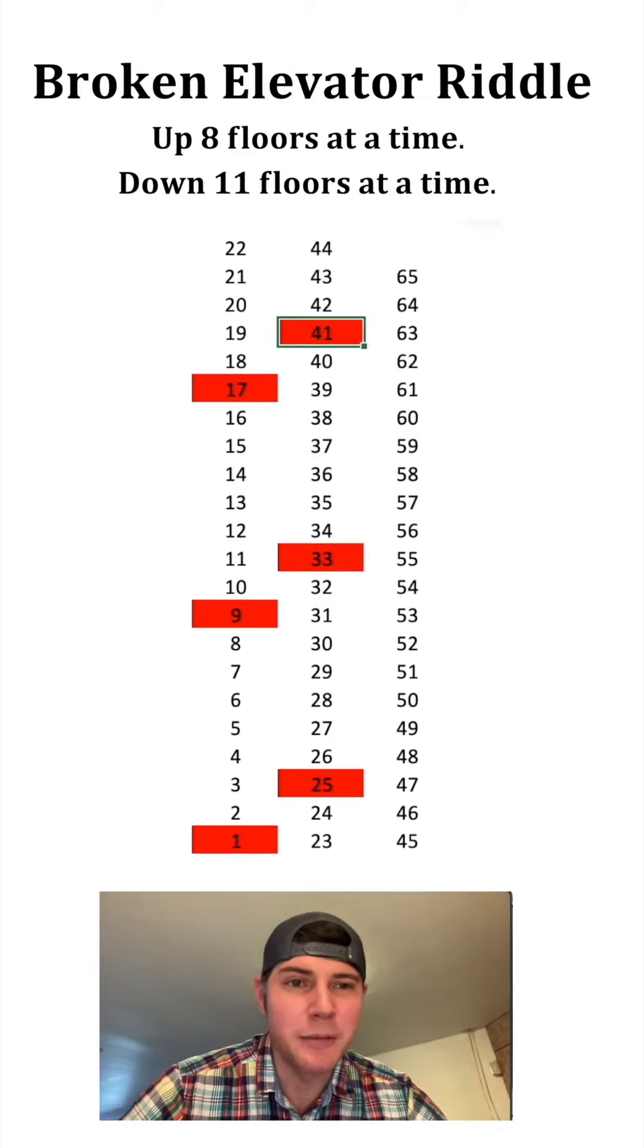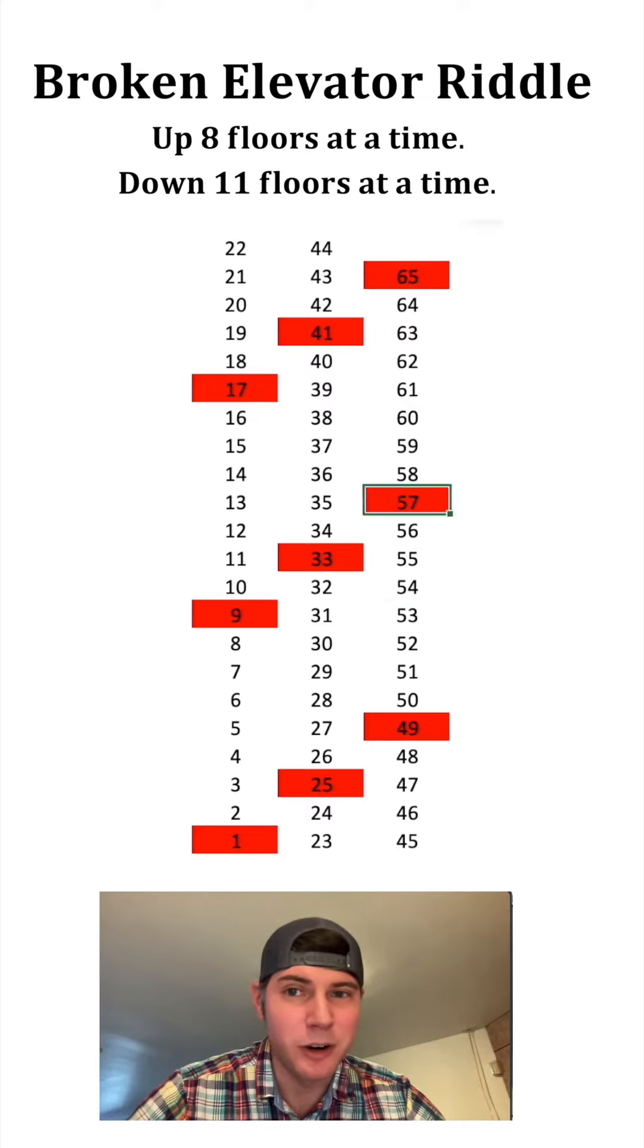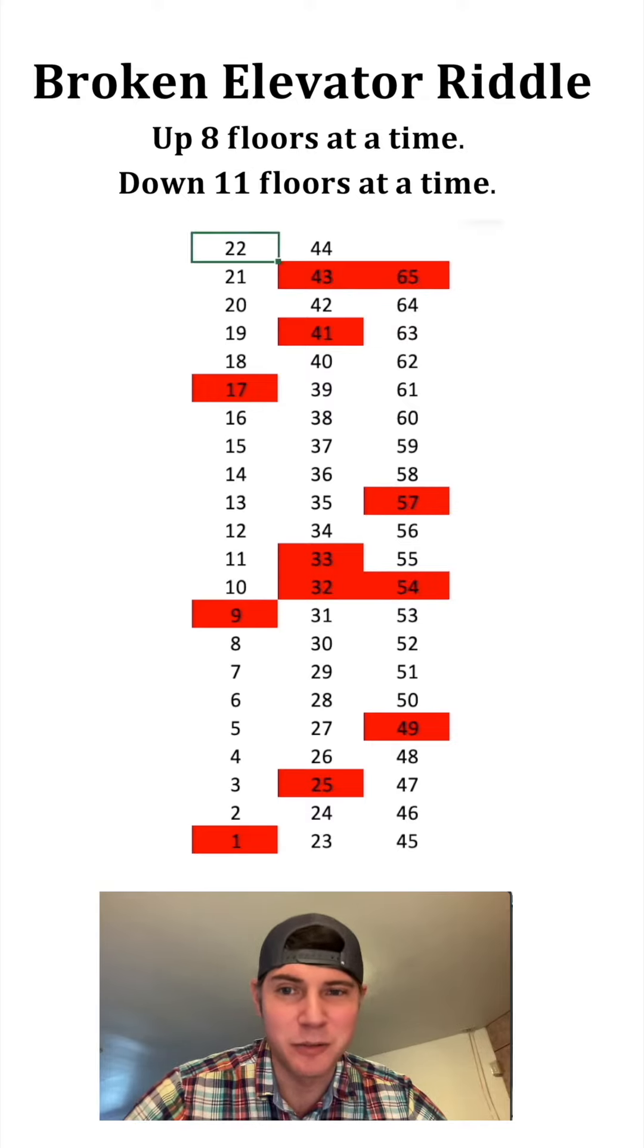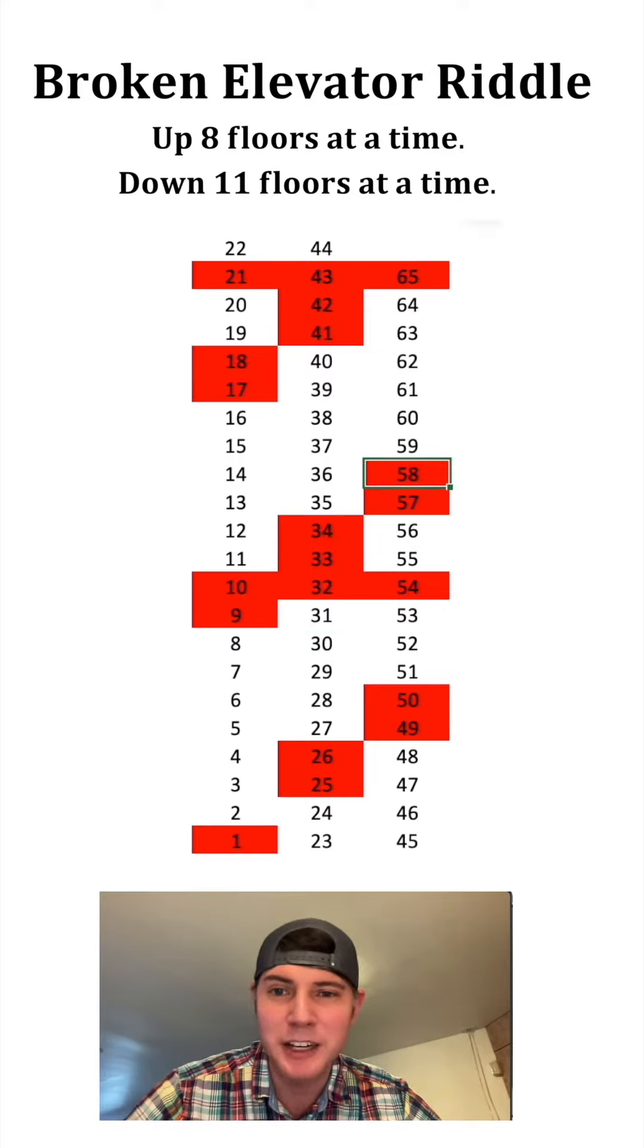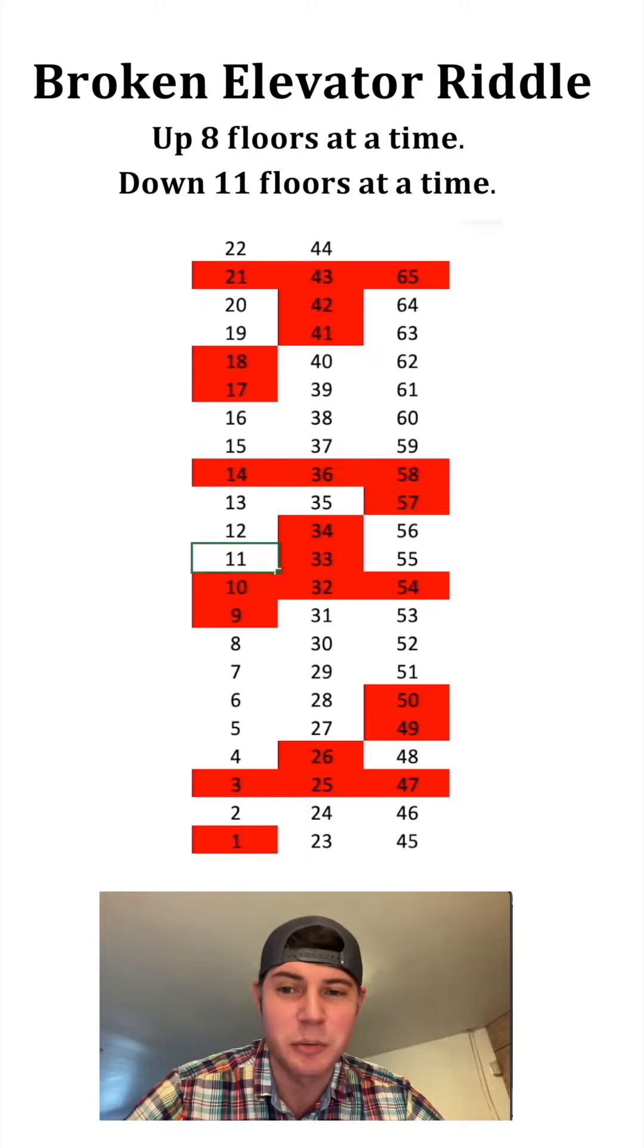We'll go up eight floors at a time all the way up until we can't anymore, and then we'll start going down 11 floors. Then when we can't anymore, we'll start going up eight floors, and then when we can't anymore, we'll start going down 11 floors. Sometimes they're going to repeat—like just there, it just repeated at 25.